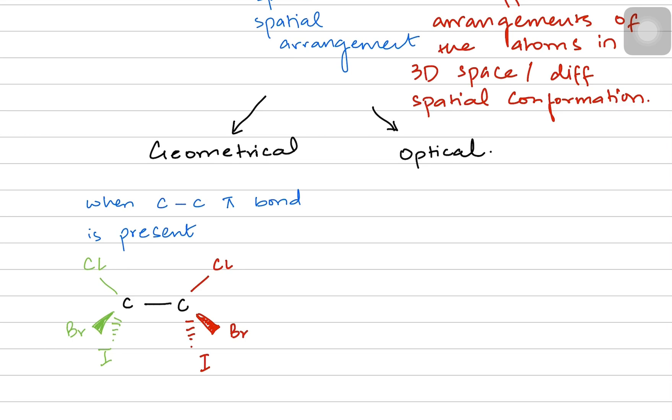But since the single sigma bond can easily rotate itself, the atoms, the bromine atom, the chlorine atom and the iodine atom can also rotate themselves. So that is why there is no concept of restriction in rotation. These atoms can continue to rotate, the bonds can continue to twist itself. So we can't pause the structure.